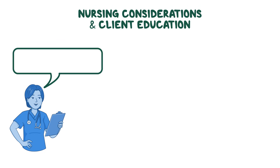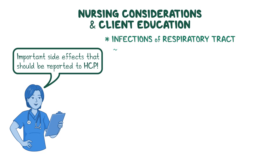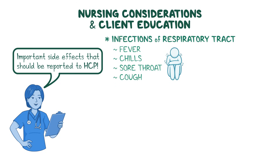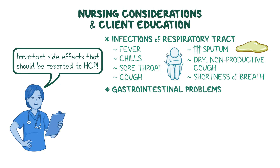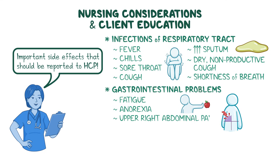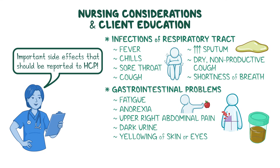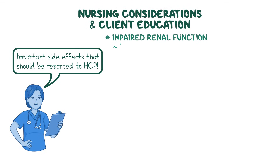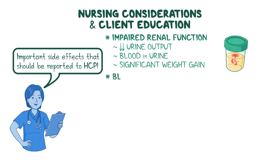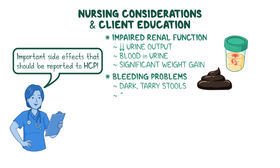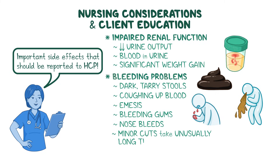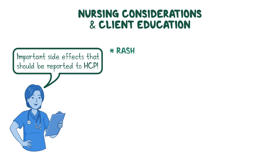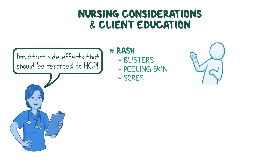Be sure to review how to recognize important side effects that should be reported to their healthcare provider right away. This includes infections of the respiratory tract, which could cause fever, chills, sore throat, cough, or production of large amounts of sputum, as well as a dry non-productive cough or shortness of breath; gastrointestinal problems that could manifest as fatigue, anorexia, upper right abdominal pain, dark urine, or yellowing of the skin or eyes; impaired renal function, which can present with decreased urine output, blood in the urine, or significant weight gain; bleeding problems that could manifest as dark tarry stools, coughing up blood or emesis that looks like coffee grounds, bleeding gums, nosebleeds, or minor cuts that take an unusually long time to stop bleeding; and lastly, the development of a rash that could look like blisters or peeling skin, as well as sores in the mouth, nose, or eyes.